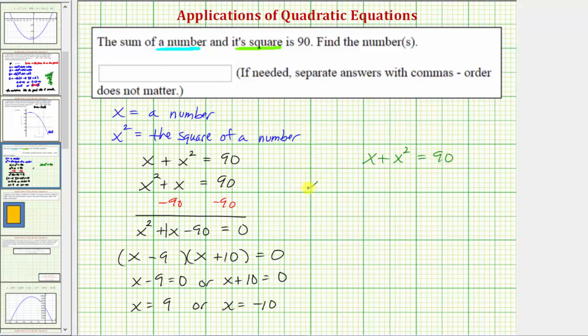Let's check our solution x equals nine. So we'd have nine plus nine squared equals 90. Well we have nine plus nine squared is 81. And this does check, 90 equals 90.